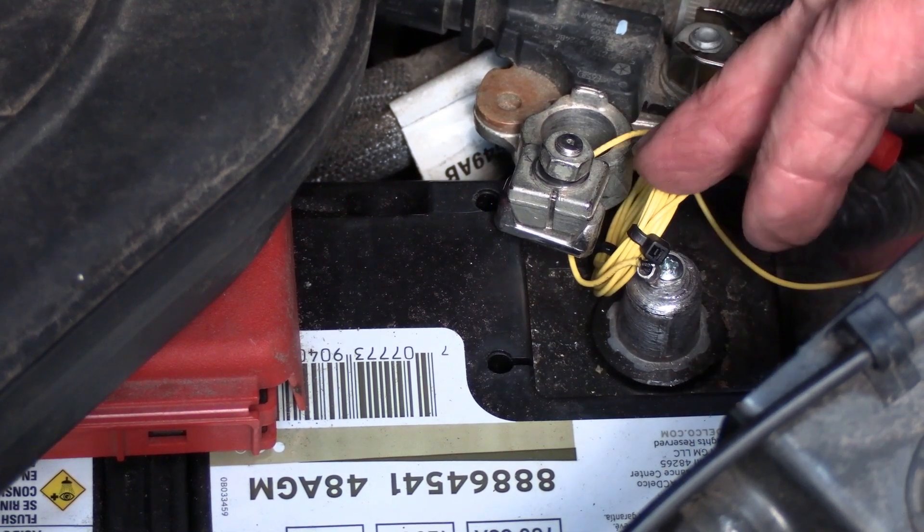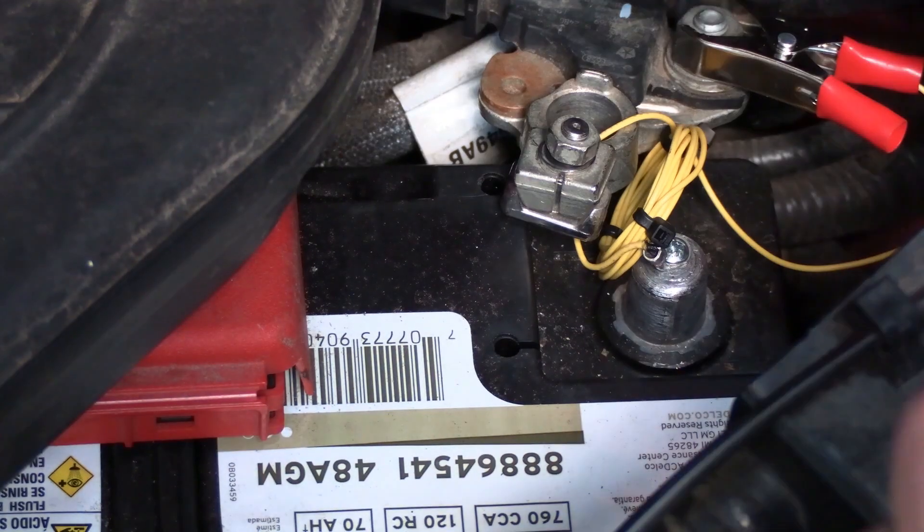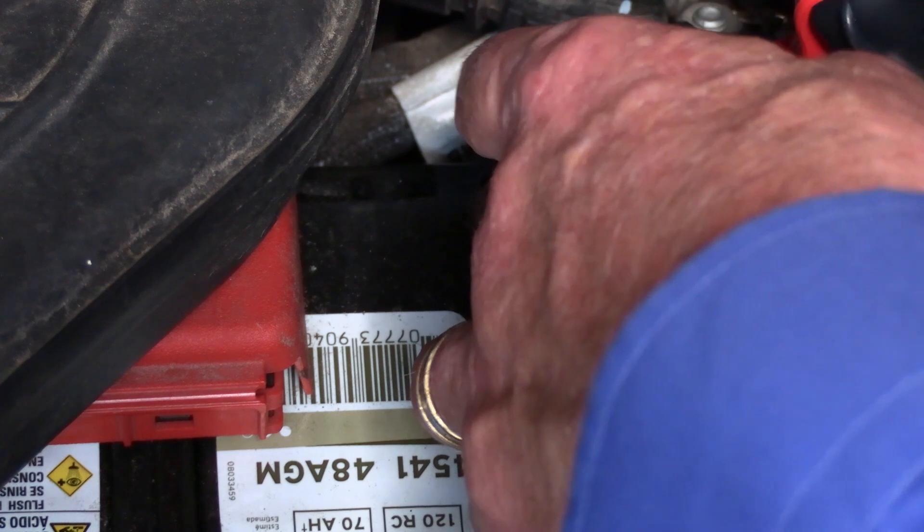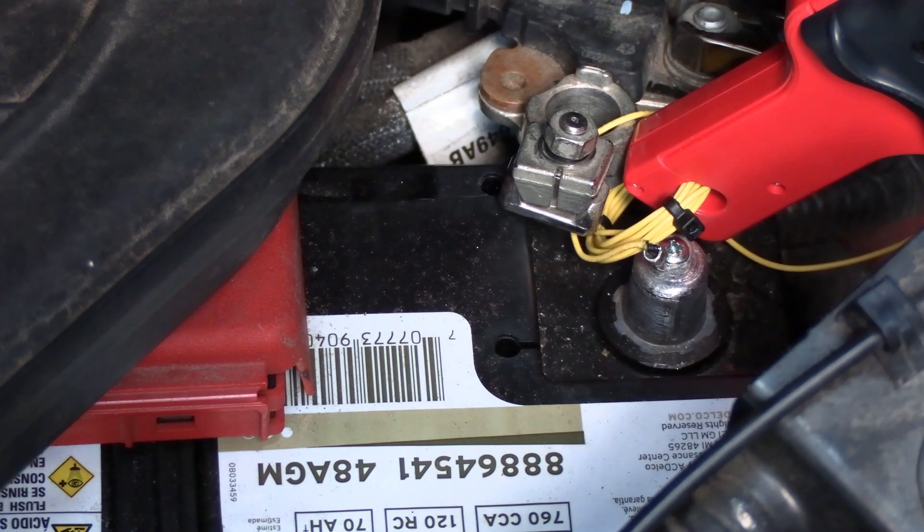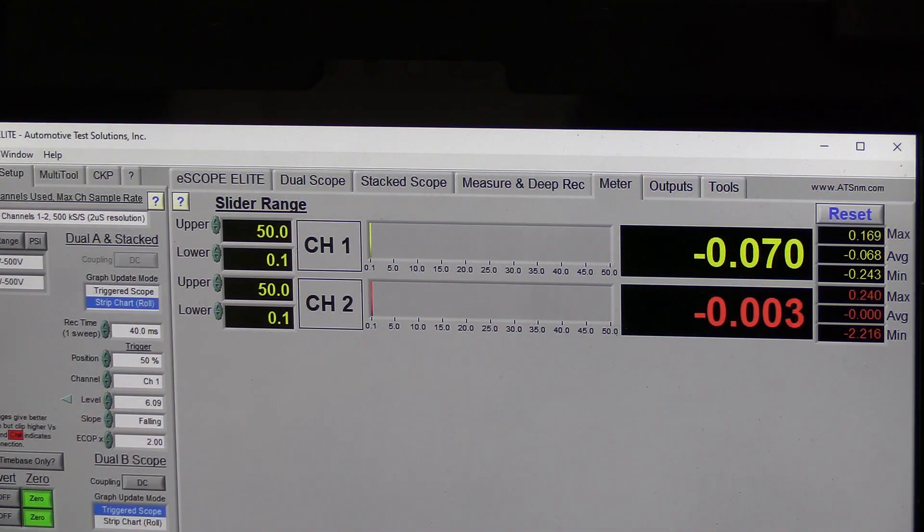Now we need to take our amp clamp and put it around and get a reading. So we're going to get this clamp around this 10 wind. So we now have a reading on the car. Now we have the amp clamp on it, we have about a 70 milliamp drain on this battery.